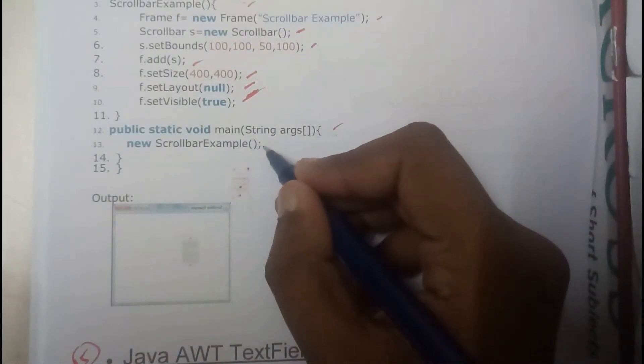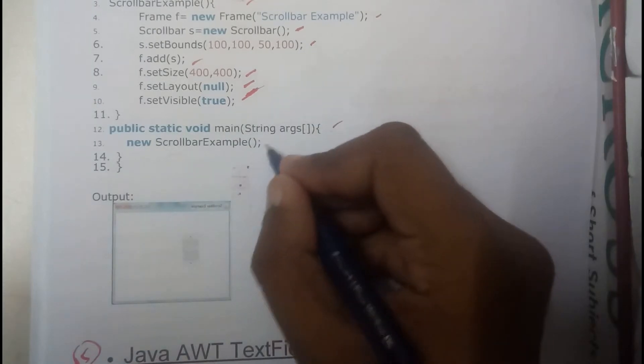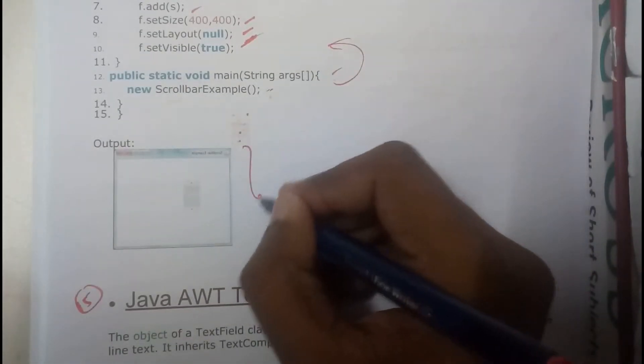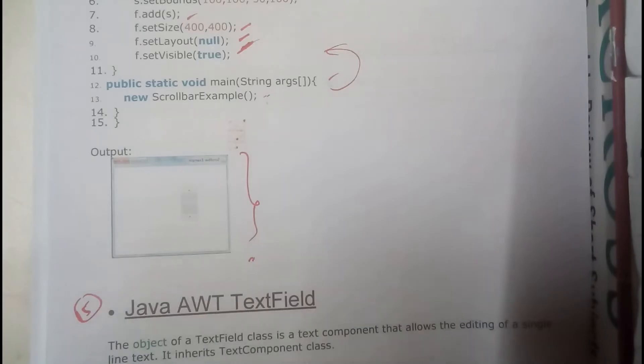We wrote public static void main. We have just created the instance of this, so it automatically calls the constructor. This will be our output. That is nothing but the scrollbar.